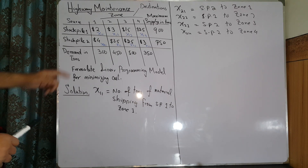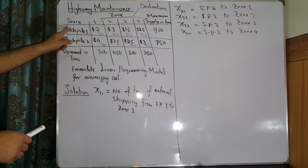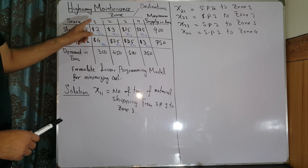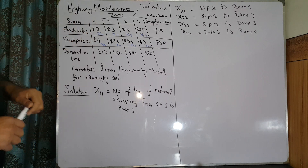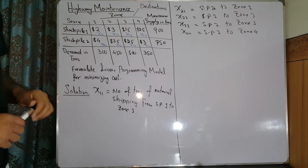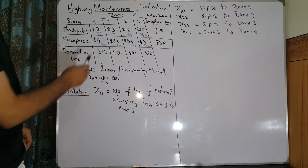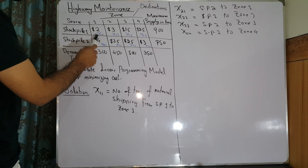First of all, we define the decision variables. Let x11 represent the number of tons shipped from stockpile 1 to zone 1, x12 from stockpile 1 to zone 2, x13 from stockpile 1 to zone 3, and x14 from stockpile 1 to zone 4.